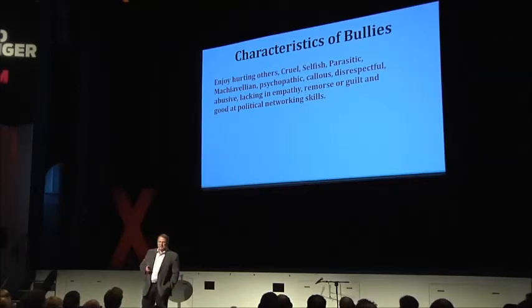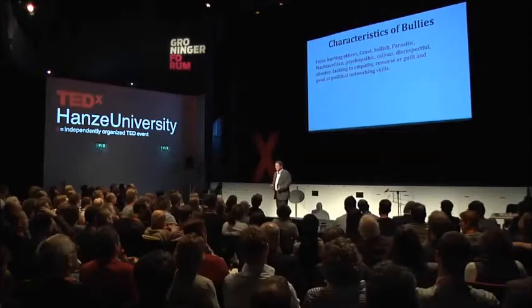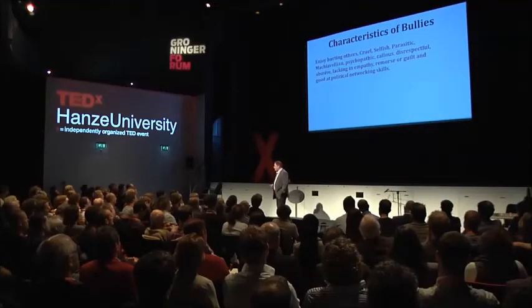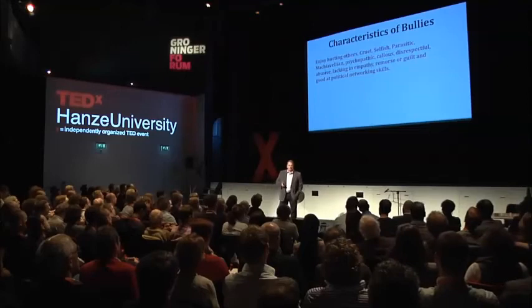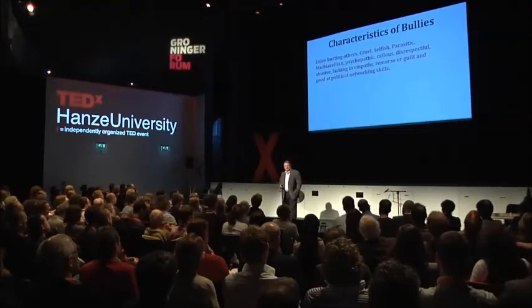There's an unspoken underlying sense of bewilderment — who are these people that enjoy watching others get hurt? They clearly enjoy it. The words used to describe bullies are: they enjoy hurting people, they're cruel, selfish, parasitic, Machiavellian. In the literature you start to see a lot of words to do with disocial personalities: antisocial personality disorder, sociopathy, psychopathy — and many of these words are similar to words used to identify corporate psychopaths.